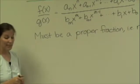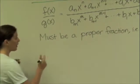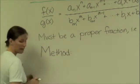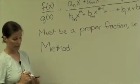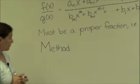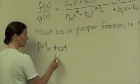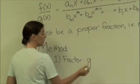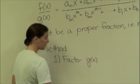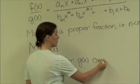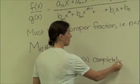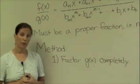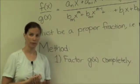So, let's start on the actual process. The method that we use has five steps. The first step is to factor g(x) completely. This means into a product of linear and irreducible quadratic, so quadratics that only have imaginary roots, terms.